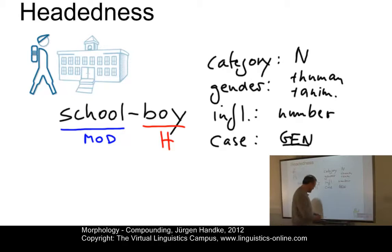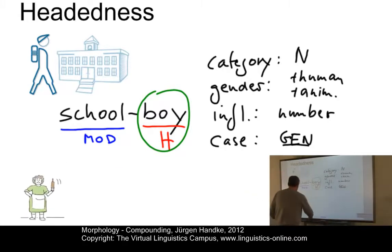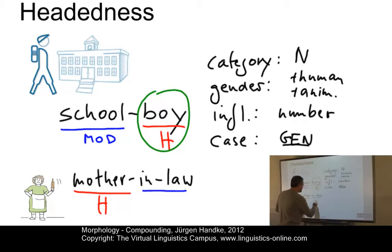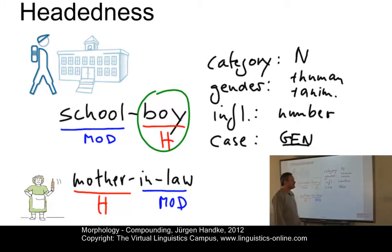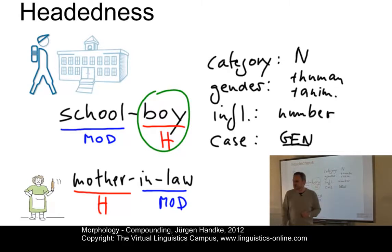So these are the properties that determine the head. As you can see, the head normally stands on the right-hand side. However, there are some exceptional compounds in present-day English, like 'mother-in-law', where the head is clearly on the left-hand side and the modifier is on the right. So 'mothers-in-law' would be the plural — 'mother' takes number. It is also animate and human: 'the mother-in-law who' and not 'the mother-in-law which'. So clearly these criteria apply also to left-headed compounds.